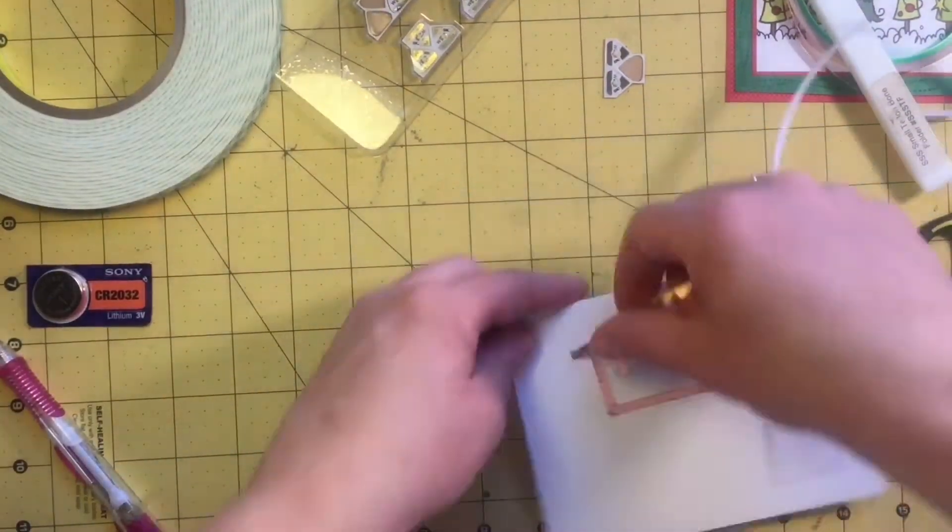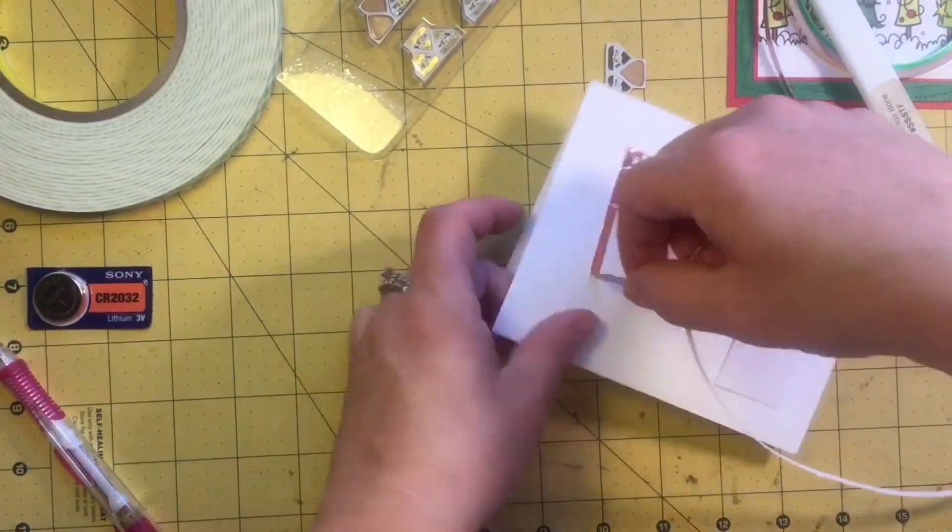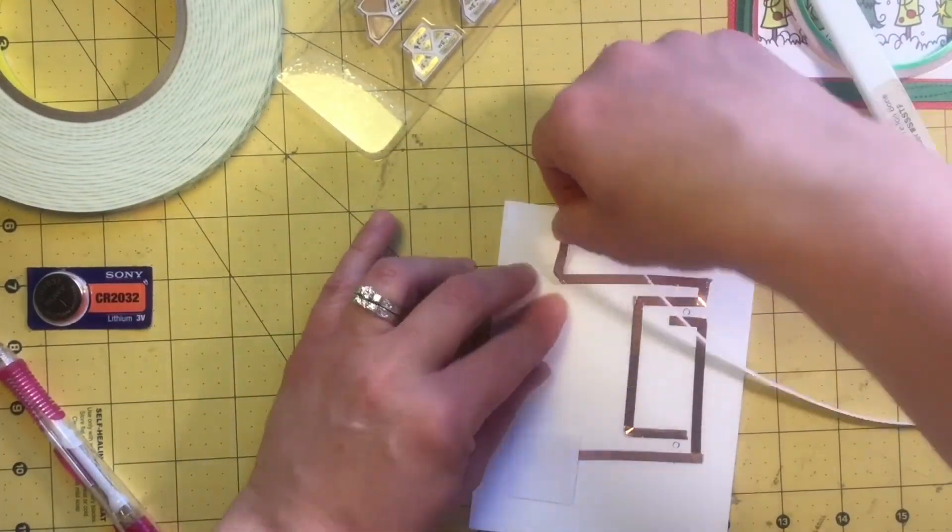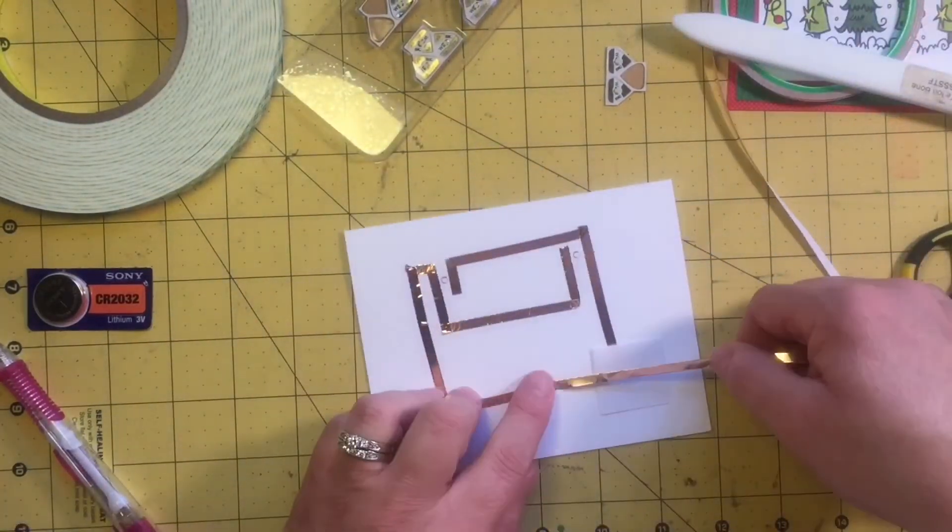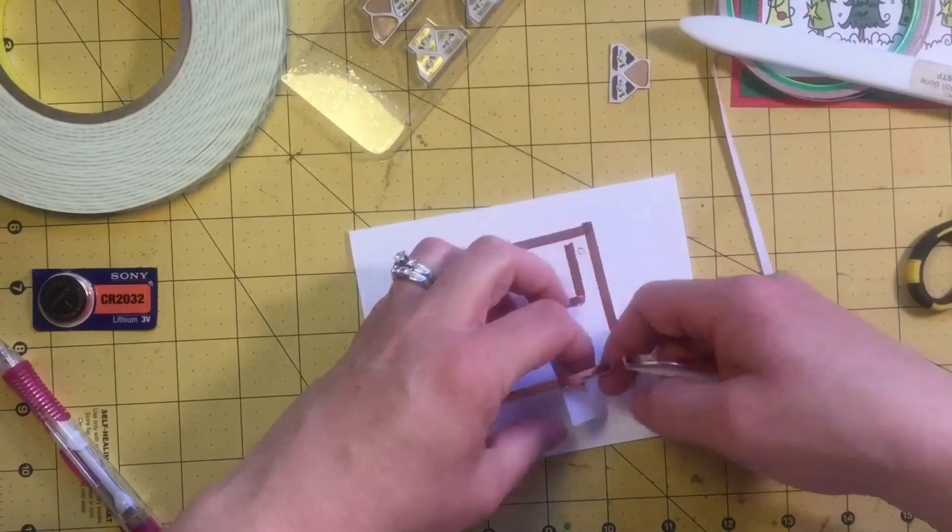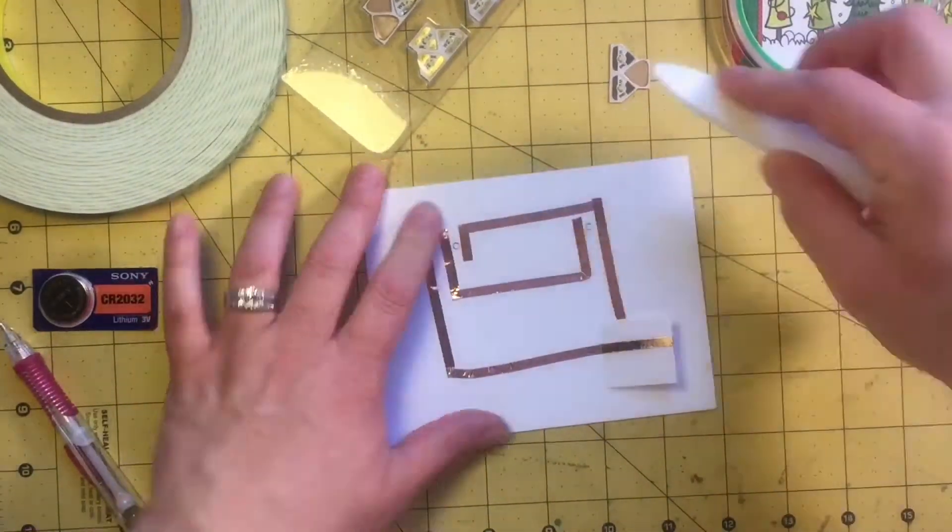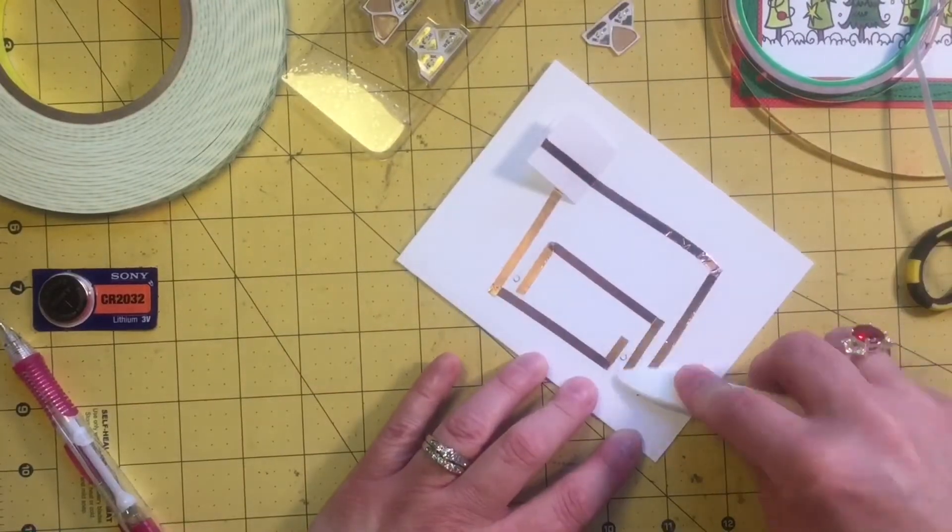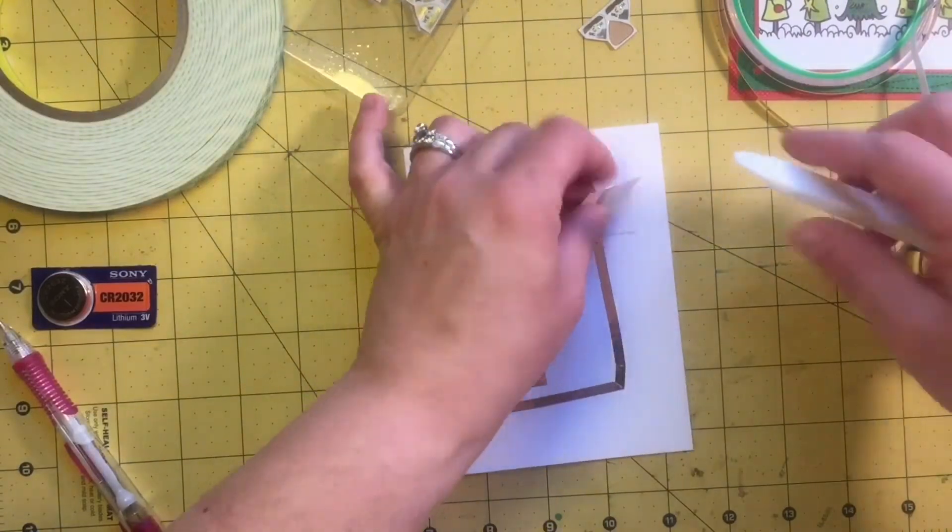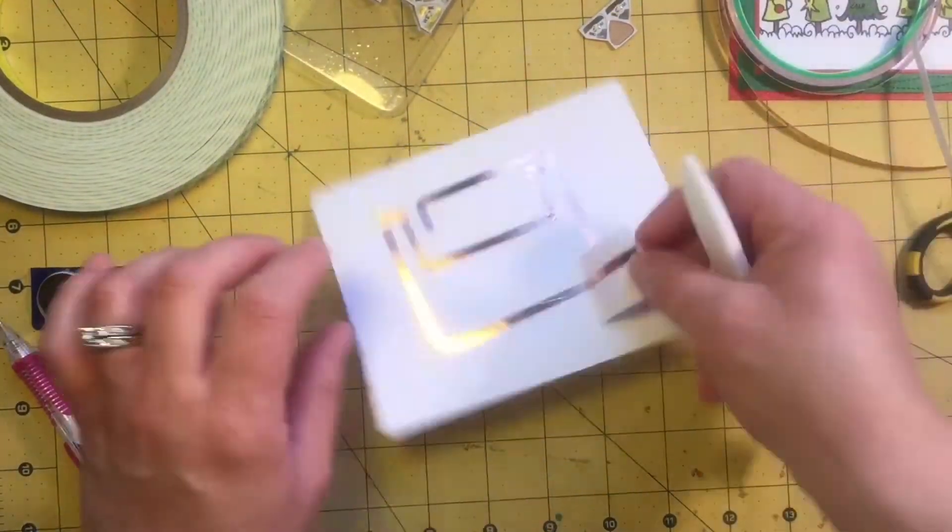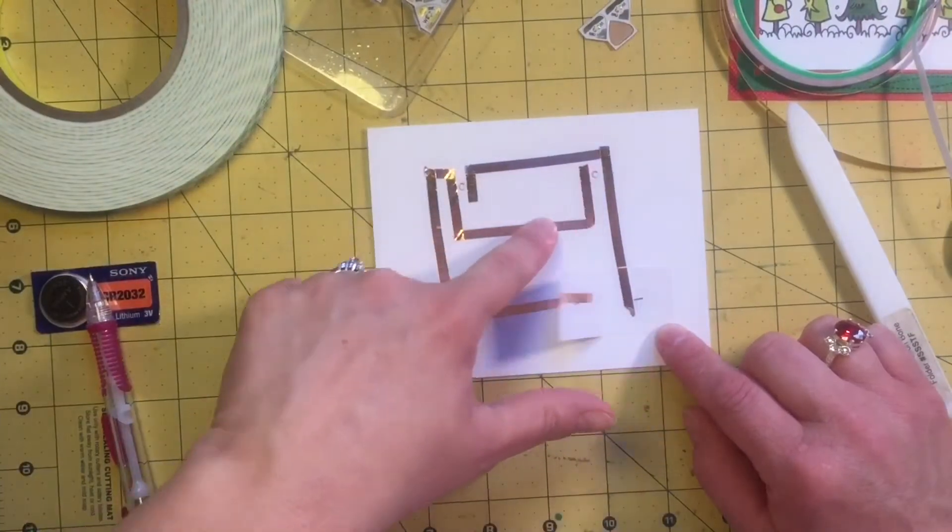And here I'm making my positive path, and it's one continuous line. For best results, it's best to do one continuous line. I have had to tear it and patch it in, and as long as you burnish it very well, it will still work. But it's best to do one continuous path. You have to go over the top of that housing and back around so that when the battery's in between, it's being touched on both sides.